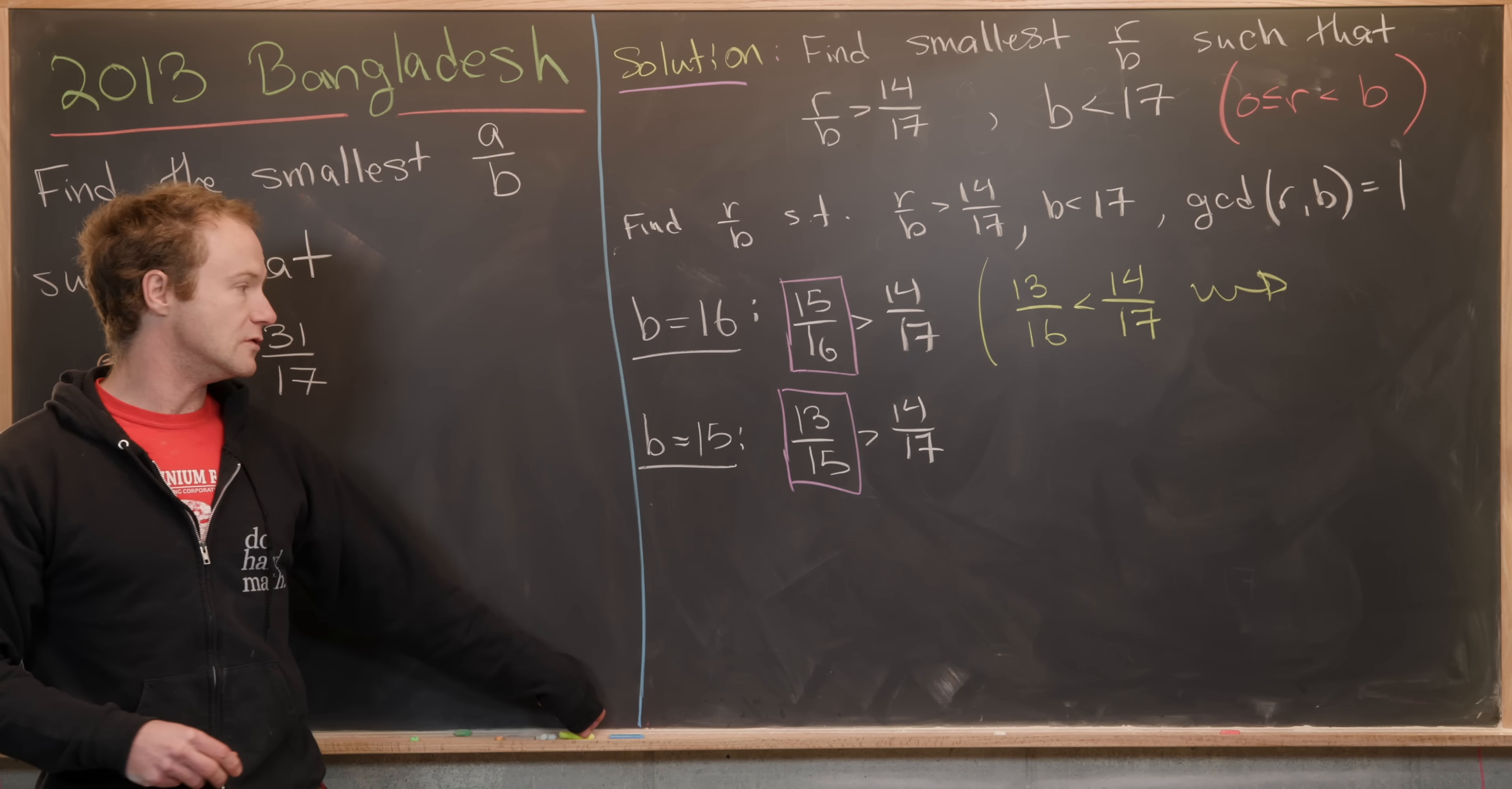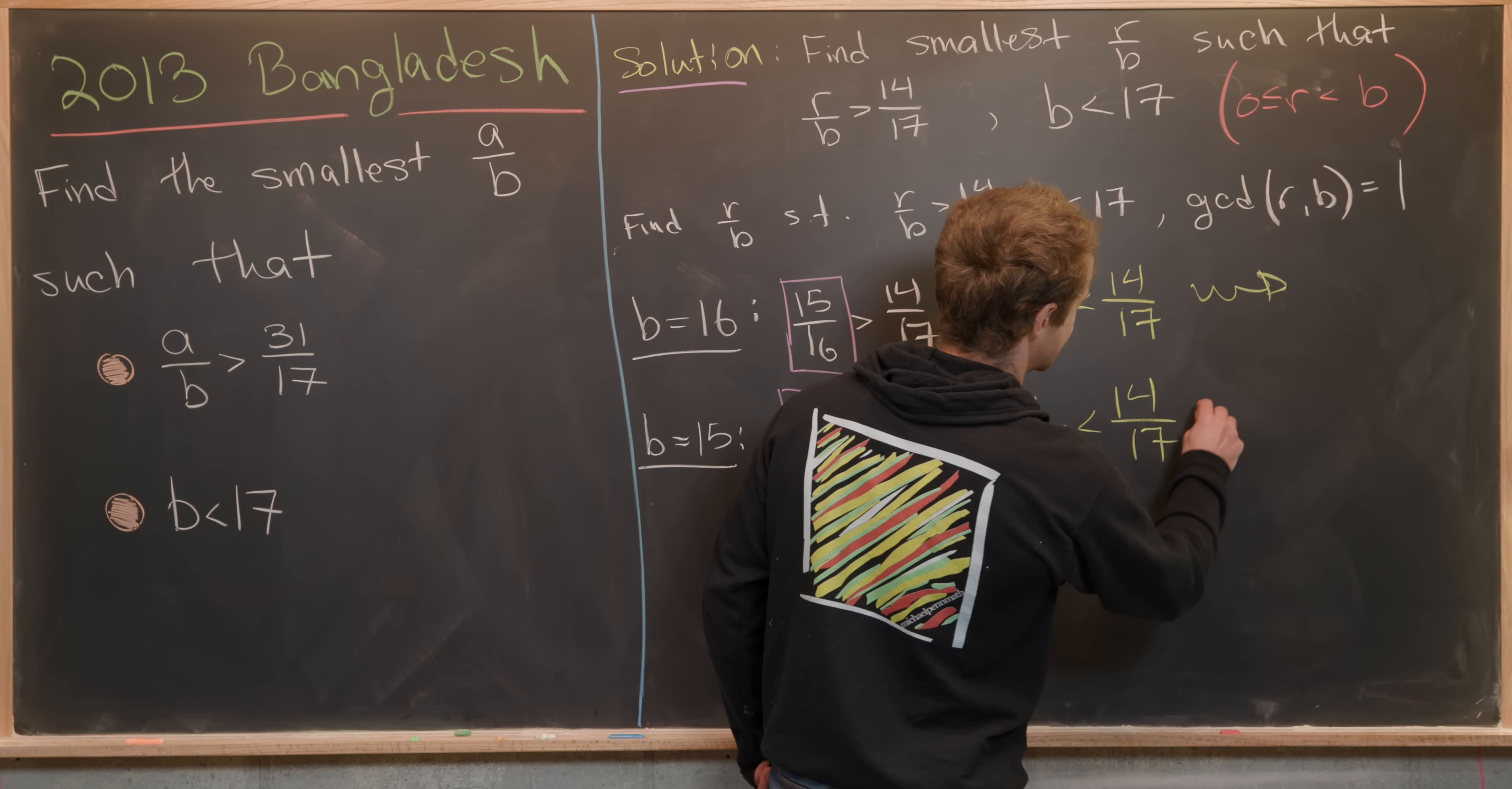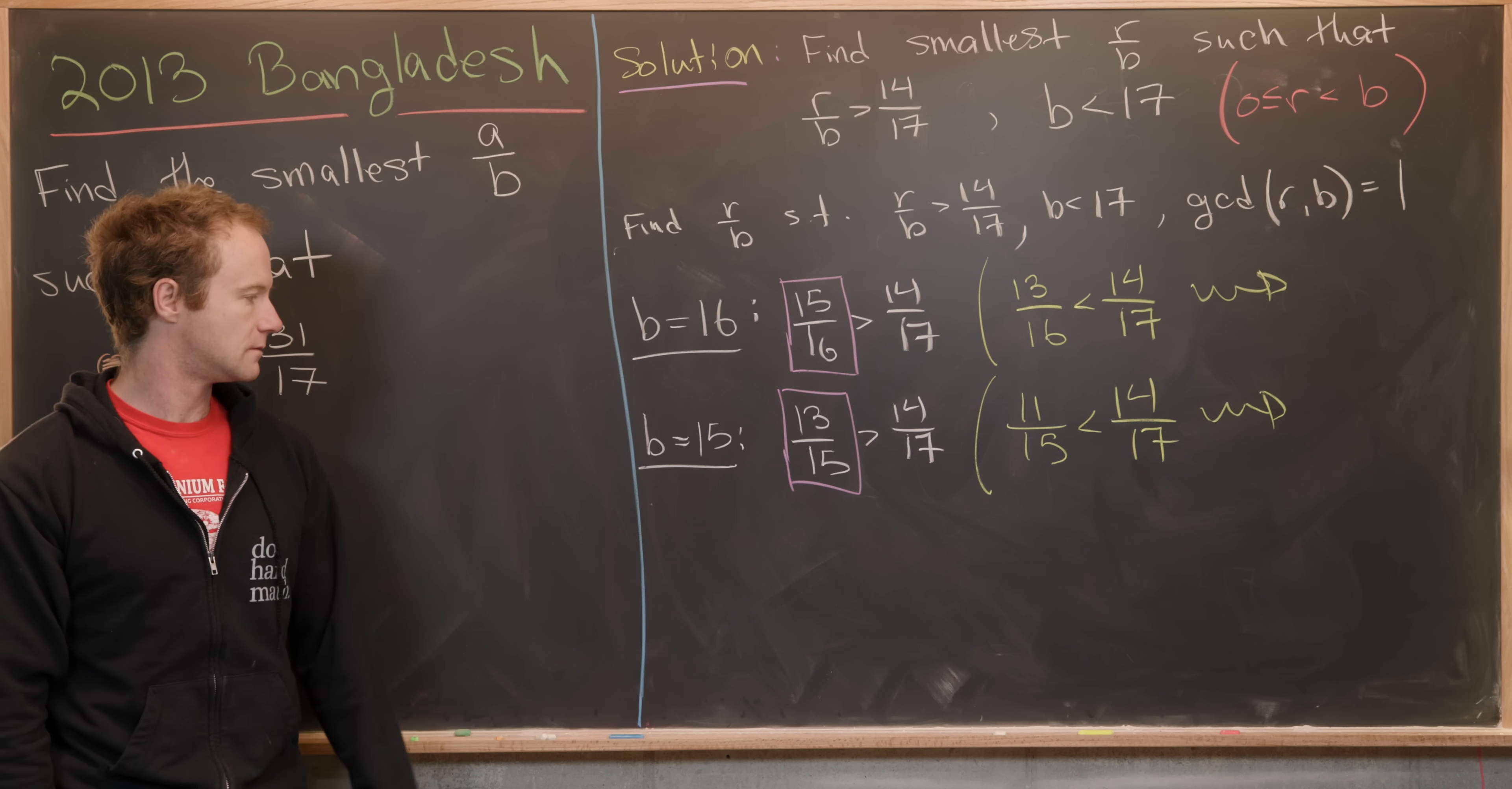But if we move smaller than 13 over 15, like to 11 over 15, we get a number that is less than 14 over 17. So we don't have any more fractions with a denominator of 15 that are helpful for this goal.